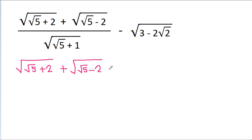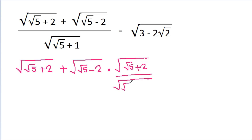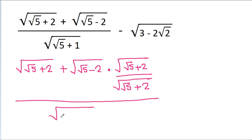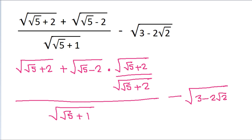We multiply it with a square root of (root 5 plus 2) over a square root of (root 5 plus 2), by a square root of (root 5 plus 1) minus a square root of (3 minus 2 root 2).